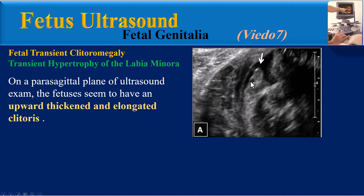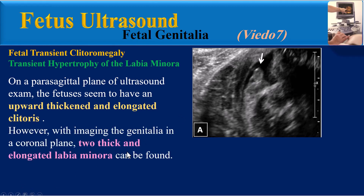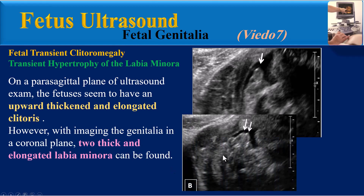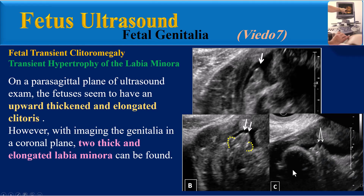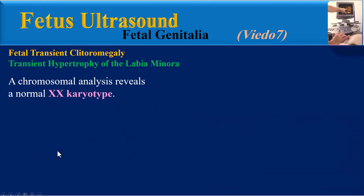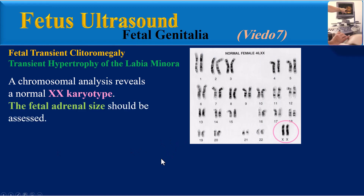On a parasagittal plane of ultrasound exam, the fetuses seem to have an upward, thickened, and elongated clitoris, as we can see in this ultrasound image. In a parasagittal plane at 22 weeks, we can see upwardly directed clitoromegaly. However, with imaging the genitalia in a coronal plane, two thick and elongated labia minora can be found. This coronal plane from the same fetus at 22 weeks shows two thick and adjacent labia minora which extend beyond the labia majora. Another image from the same fetus in a coronal plane shows the two labia are separated.